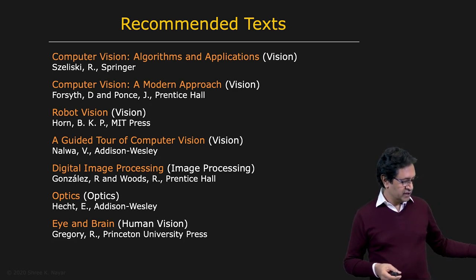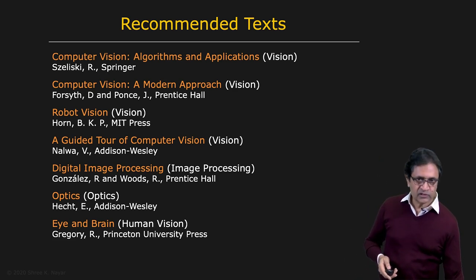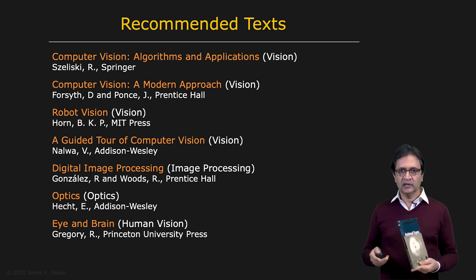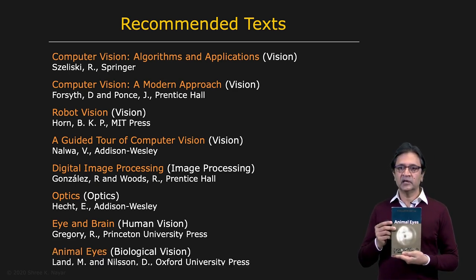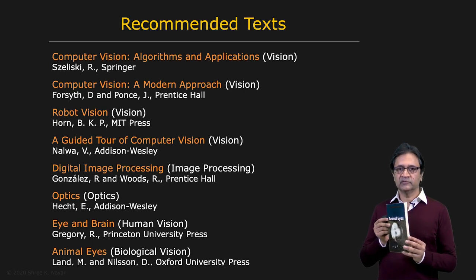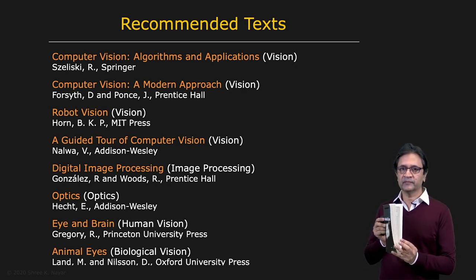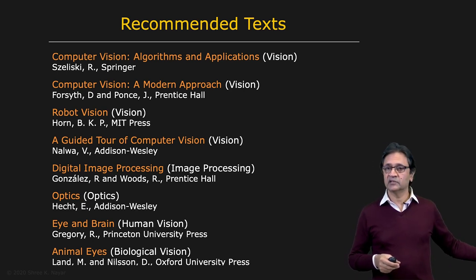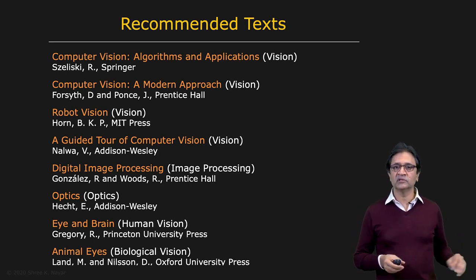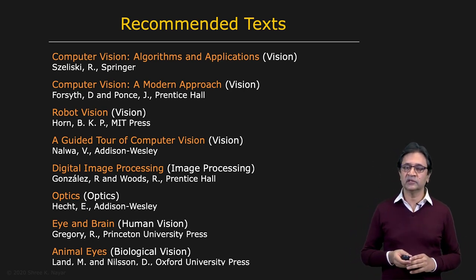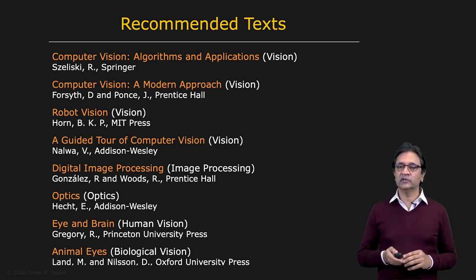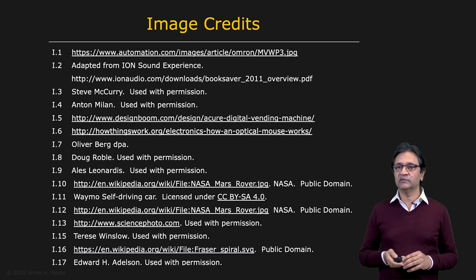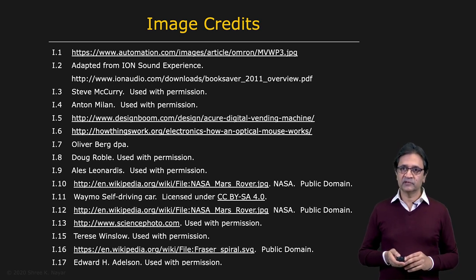And finally, if you're interested in eyes of all kinds, I would suggest Animal Eyes by Land and Nielsen — again, a very thin book, but very densely packed. I should also mention that given that it's a vision course, I use lots of visuals, and for these visuals, at the end of each lecture I include credits and references.